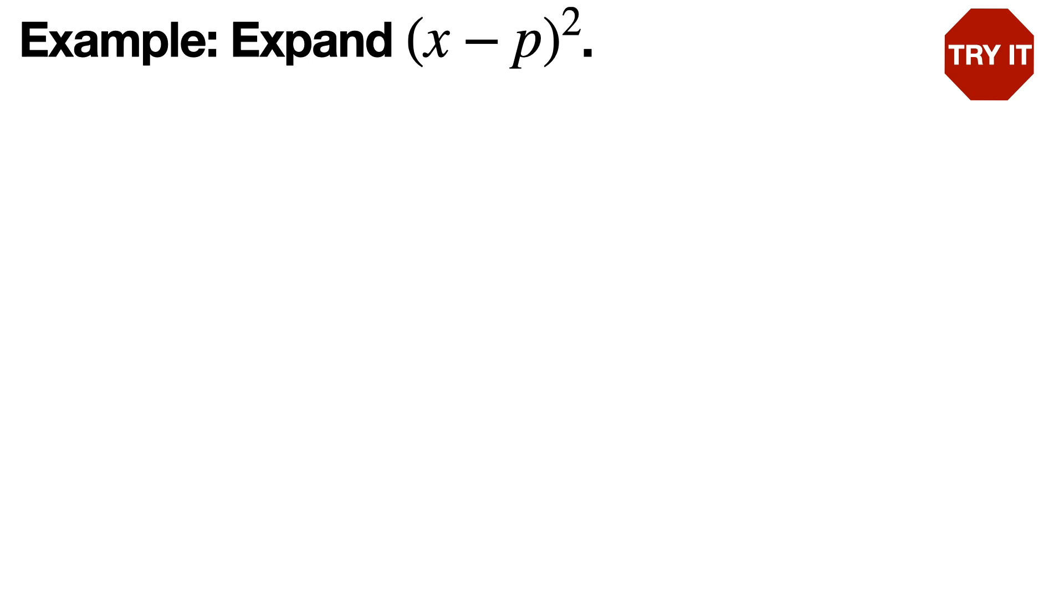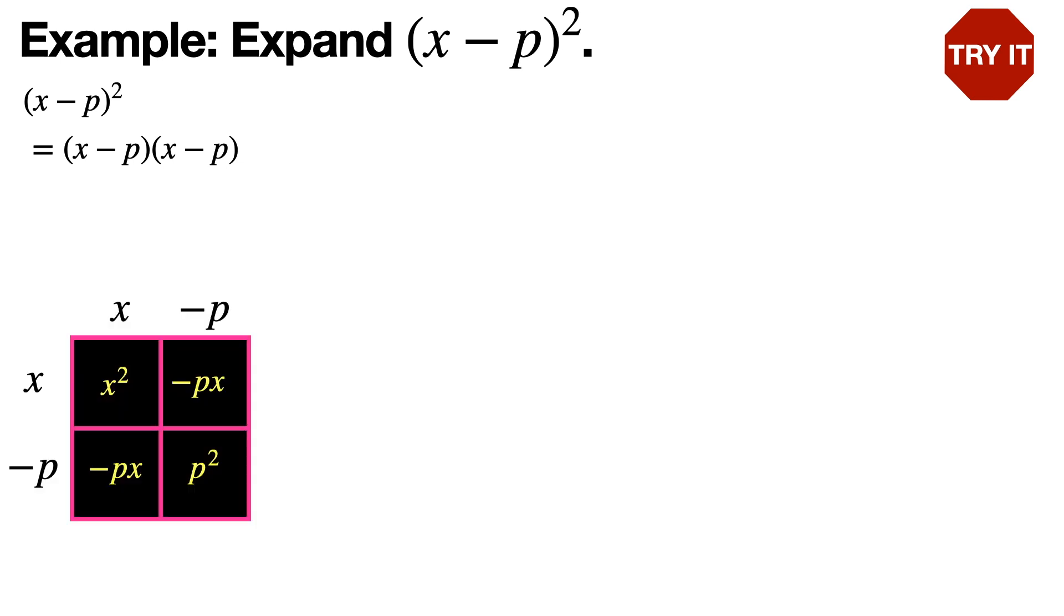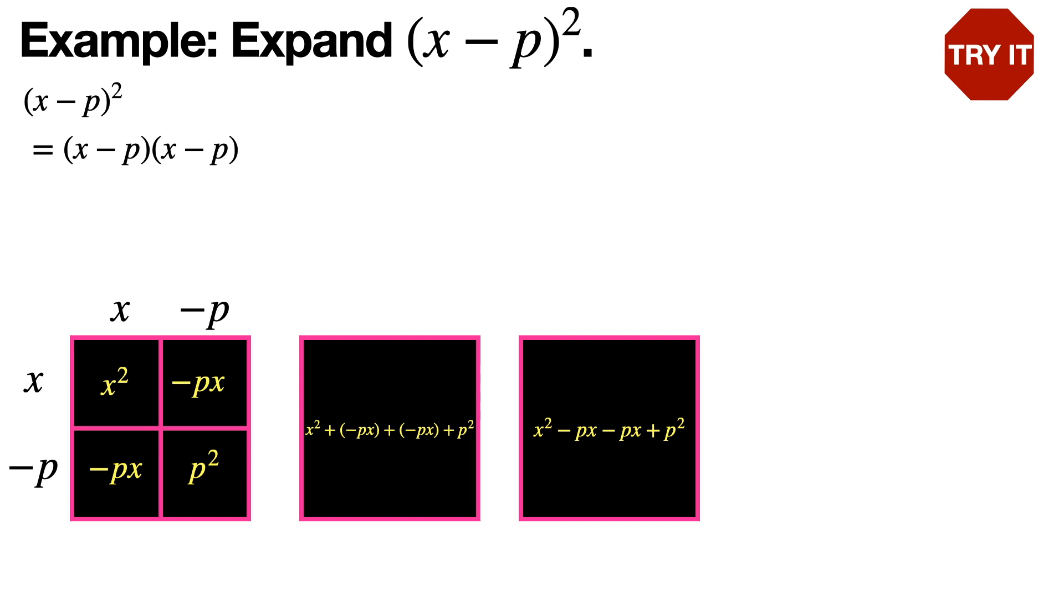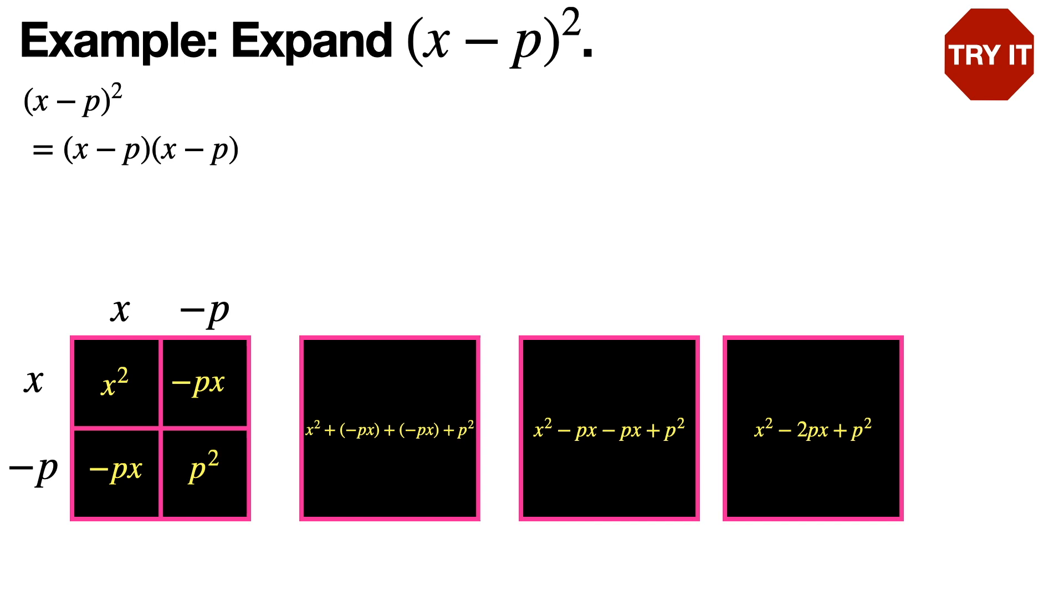x minus p squared is the same thing as x minus p times x minus p, because that's what it means to square something. One of the terms is x, and the other term is negative p. When we multiply them, we'll get x squared, two of them will be negative px, and the other will be p squared. Then you simply add these things together. Those negative px's turn into a minus, and you combine like terms to get x squared minus 2px plus p squared.